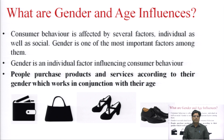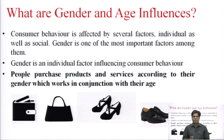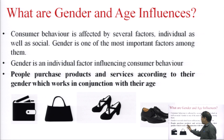For example, we can observe gender influences while purchasing jewelry — men may go for bracelets, while women generally go for necklaces or earrings. Gender has a lot of influence on purchase decisions. However, gender alone is not the only factor — the age of a person acts together with gender to decide the kind of products or services a person will buy. Gender and age work in conjunction.